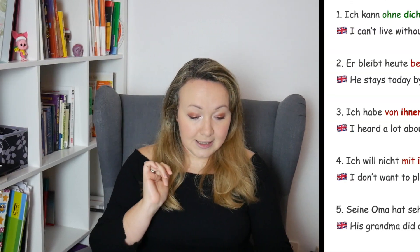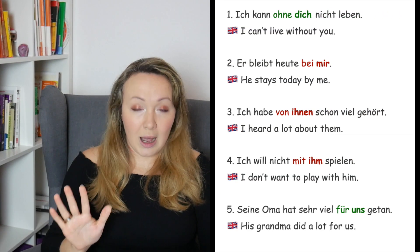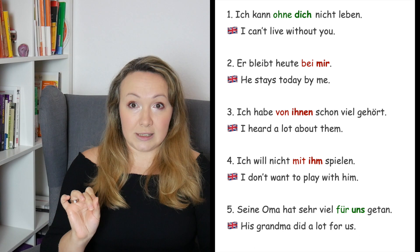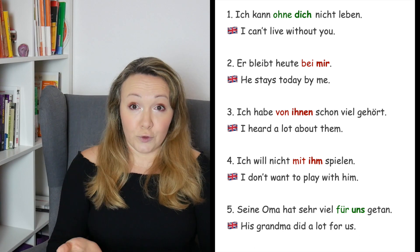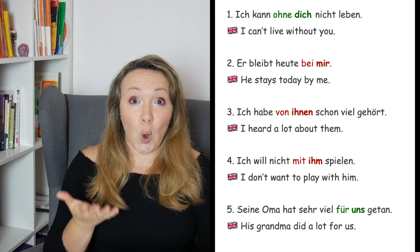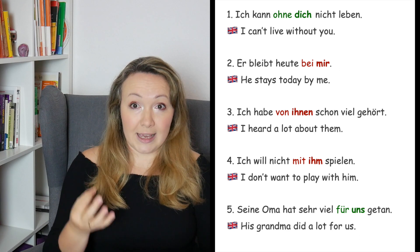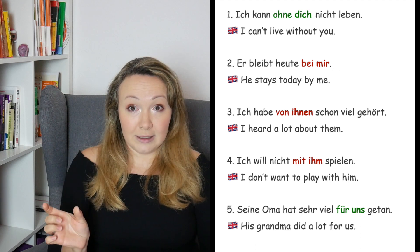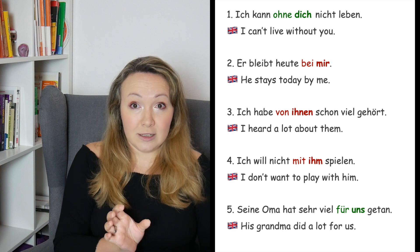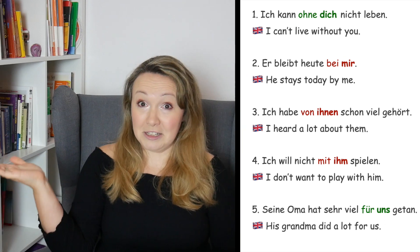The last sentence is: 'Seine Oma hat sehr viel für uns getan.' The preposition 'für' is always accusative, so we know the case is accusative, and 'wir' in accusative is 'uns.' Isn't that easy peasy?